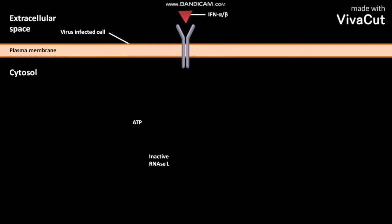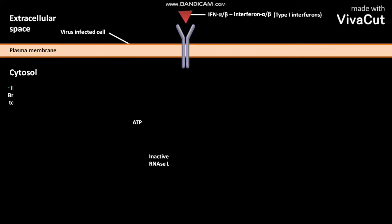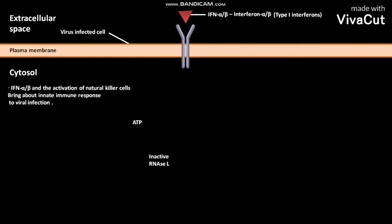IFN-alpha and IFN-beta stand for interferon alpha and interferon beta. They are type 1 interferons. IFN-alpha and IFN-beta, along with the activation of natural killer cells, bring about the innate immune response to viral infection.